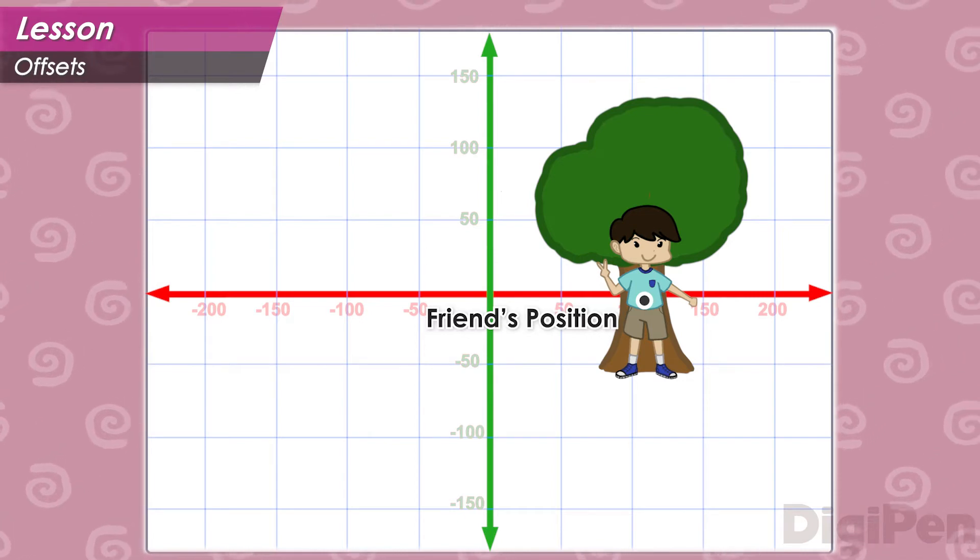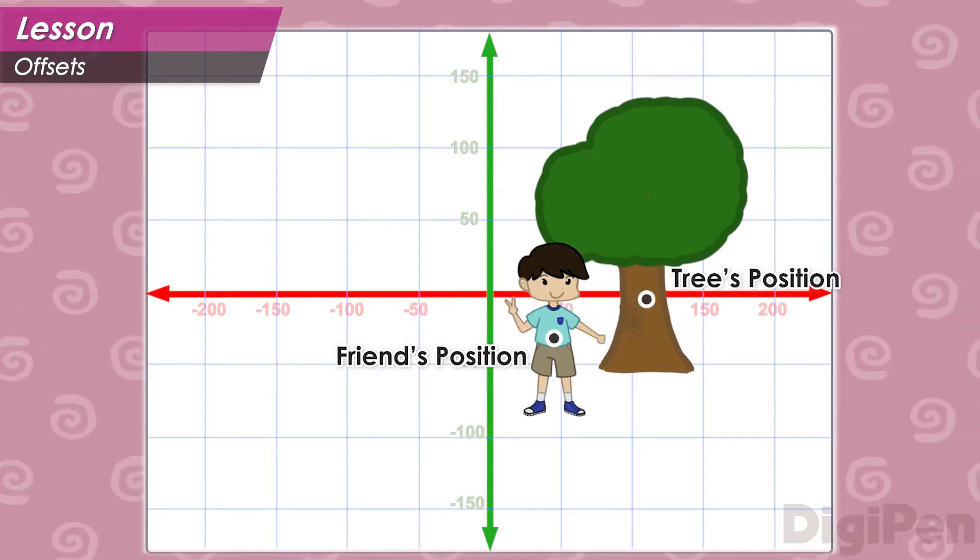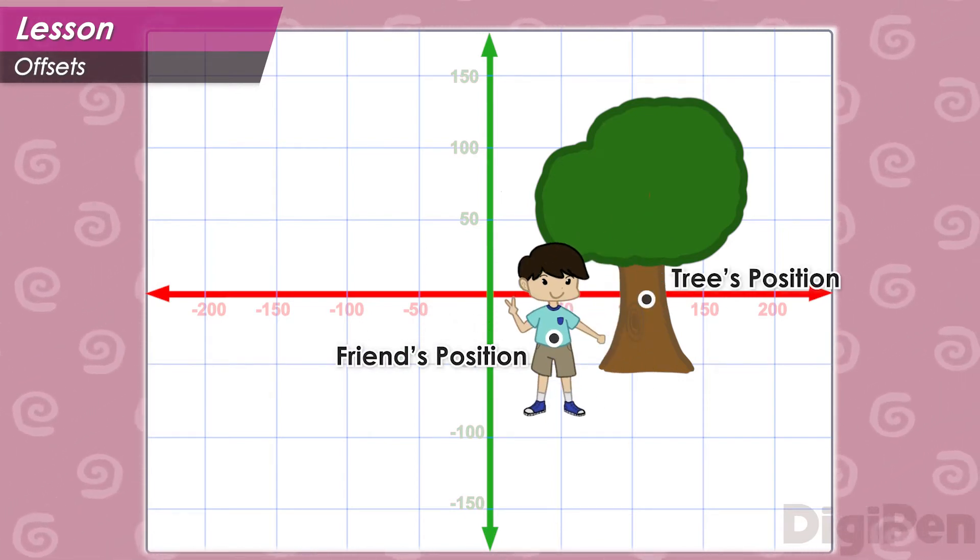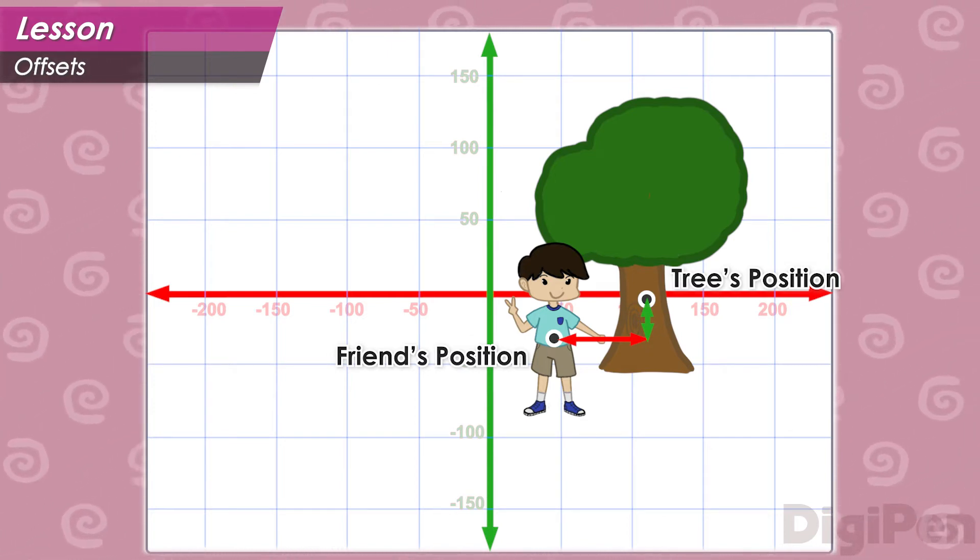We're looking for something like this, which is more realistic. Here, there's a small gap between your friend and the tree. We call this gap an offset. It's a difference in position between two things.